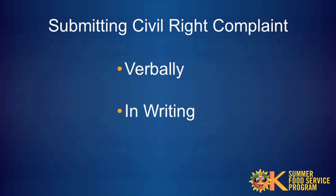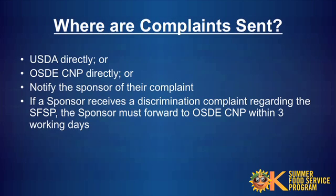Any participant or potential participant may submit a civil rights complaint of unequal treatment verbally or in writing. Complainants may choose to directly contact USDA, contact the Oklahoma State Department of Education Child Nutrition Programs, or notify the sponsor. The sponsor must forward all discrimination complaints received regarding the SFSP to the Oklahoma State Department of Education Child Nutrition Programs Office within three working days.